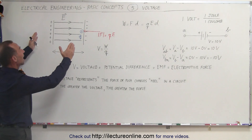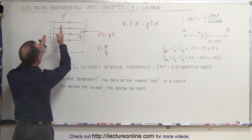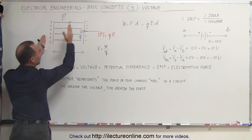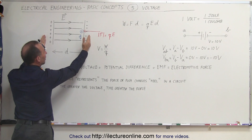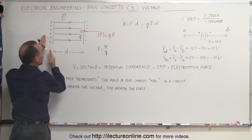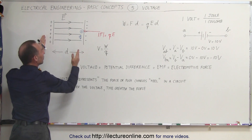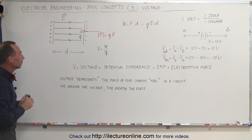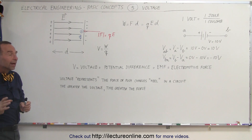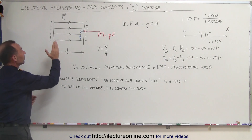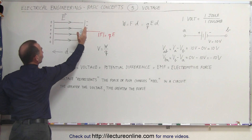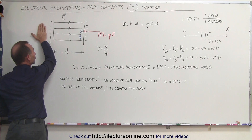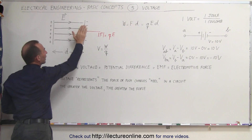Let's say we have a capacitor plate set. On one side we have a positively charged capacitor plate, and on the other side we have a negatively charged capacitor plate. They're apart a distance d from one another. We then realize there's an electric field that exists between the positive and negative charges, and the electric field will be directed from the positive charge to the negative charge.